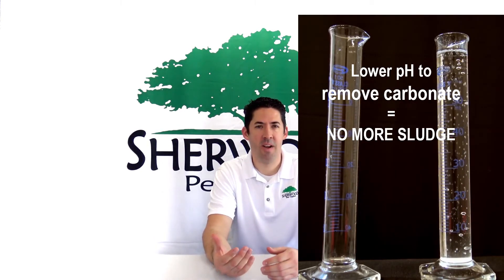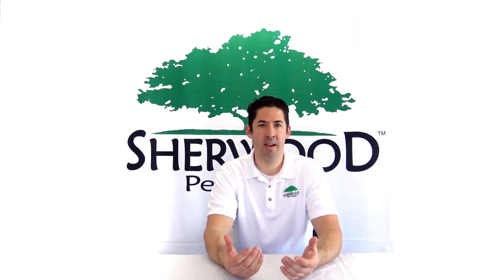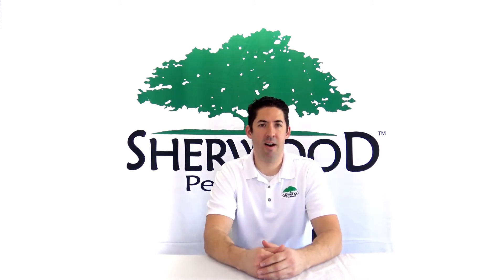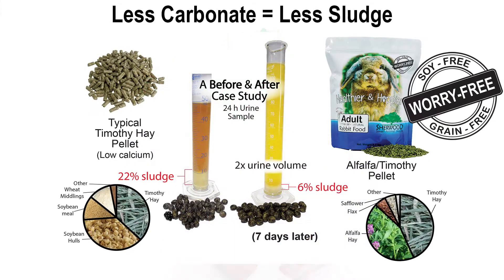If you're trying to solve a urinary health problem in your pet, most people recommend the typical timothy hay-based grain and soy-based pellet because it's low in calcium. We've already demonstrated that calcium doesn't cause the problem. If you actually took a urine sample, you would see that the sludge content is higher on that low calcium diet because there's more carbonate in the urine, compared to Sherwood foods, which are an alfalfa-timothy blend with a much higher calcium content but lower percent sludge because there's lower carbonate levels.